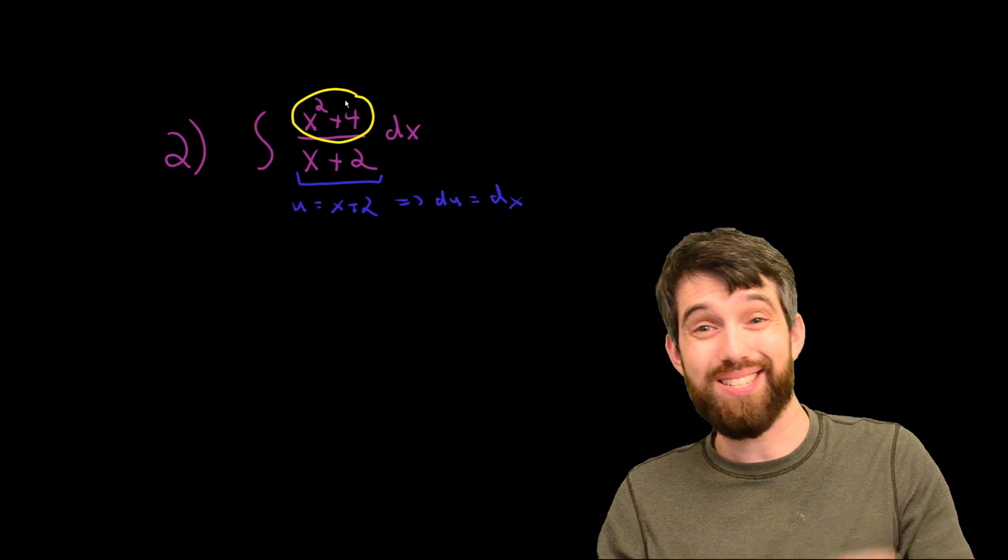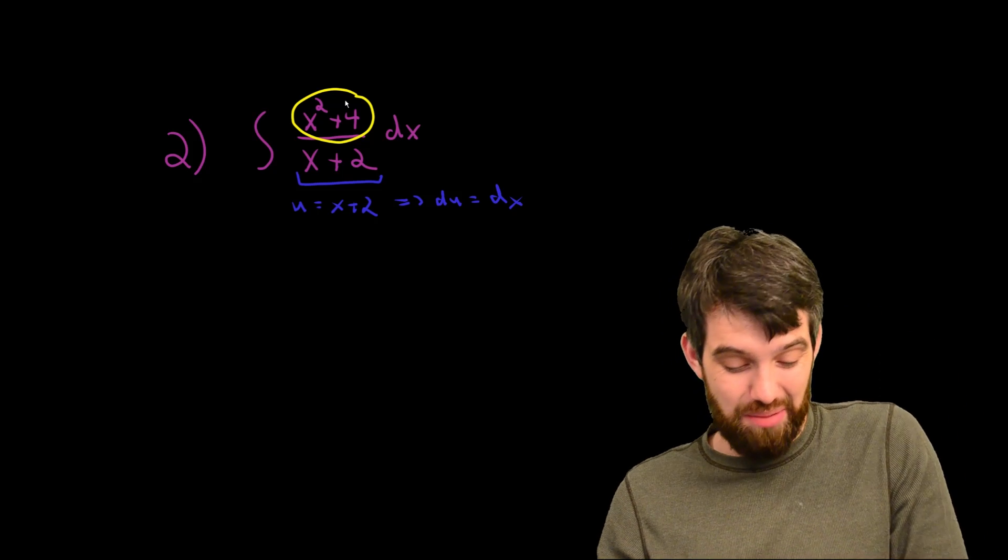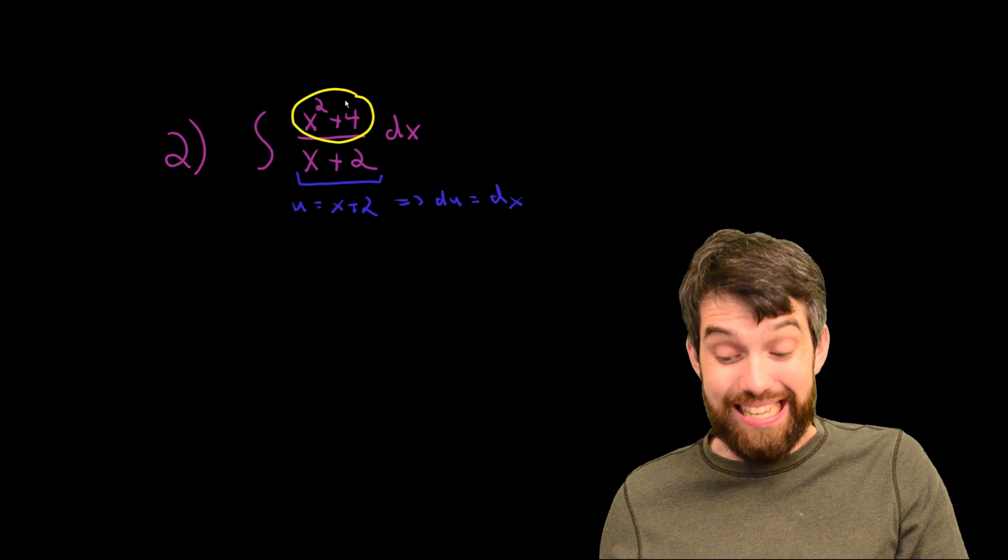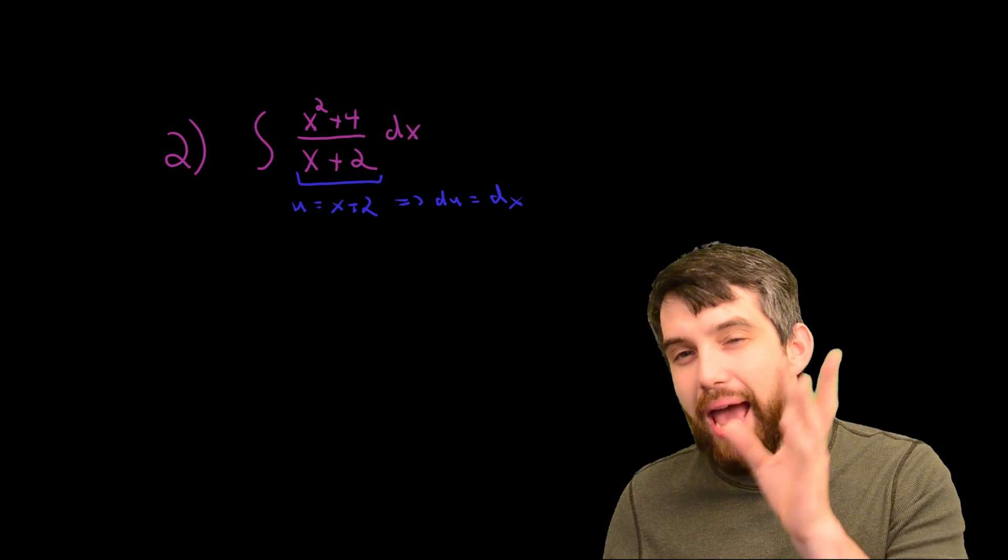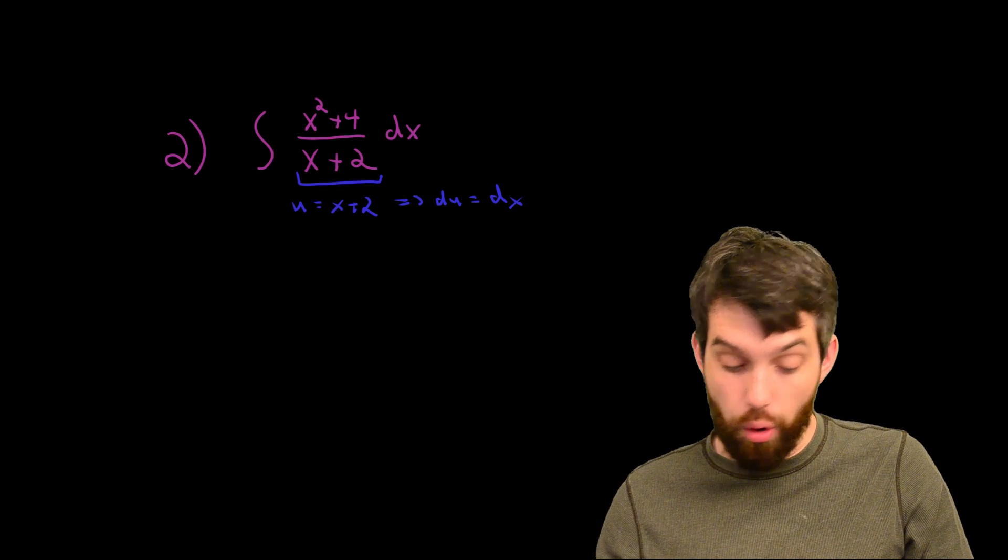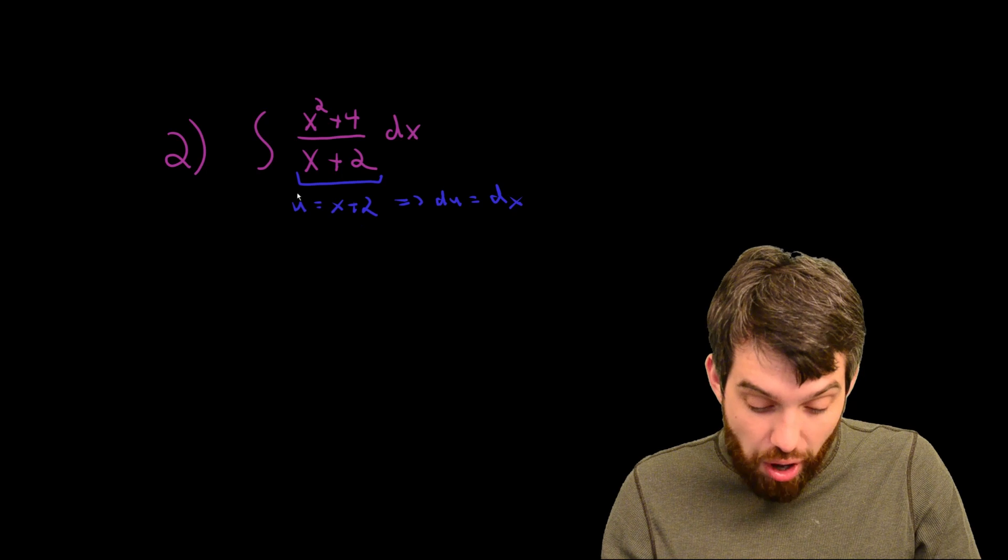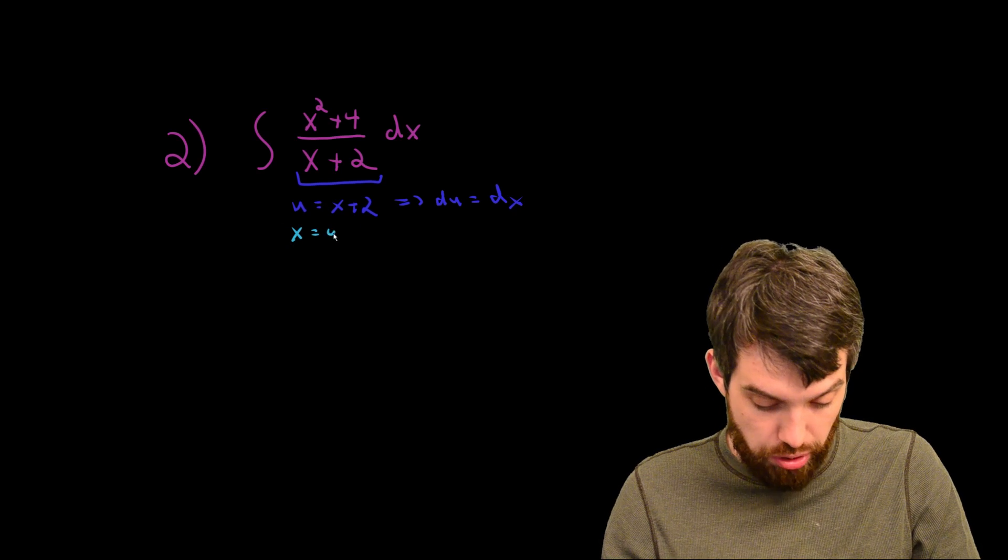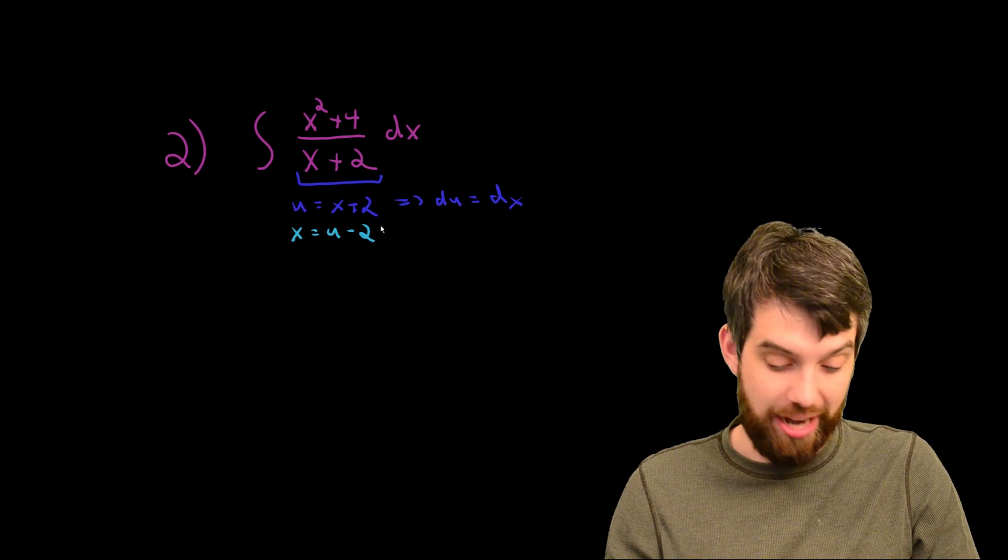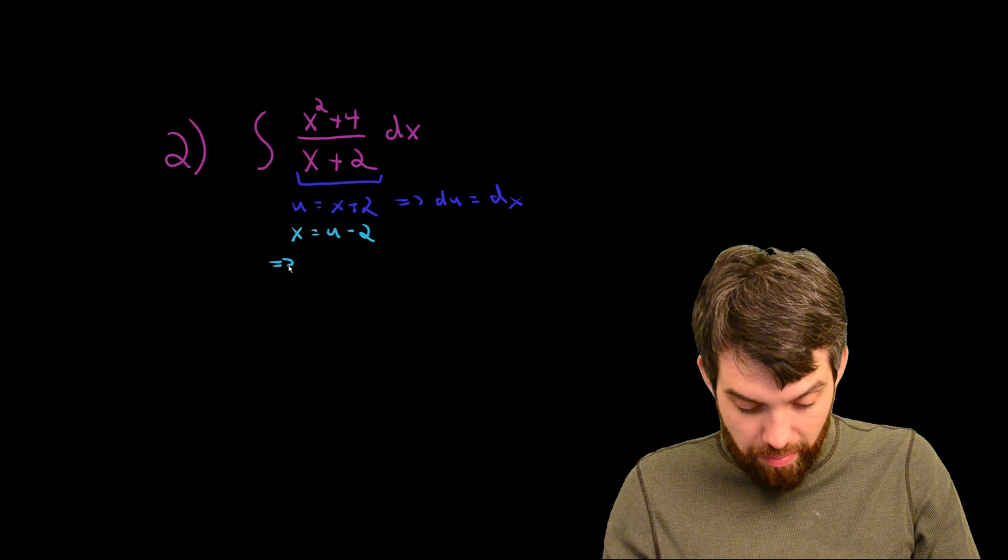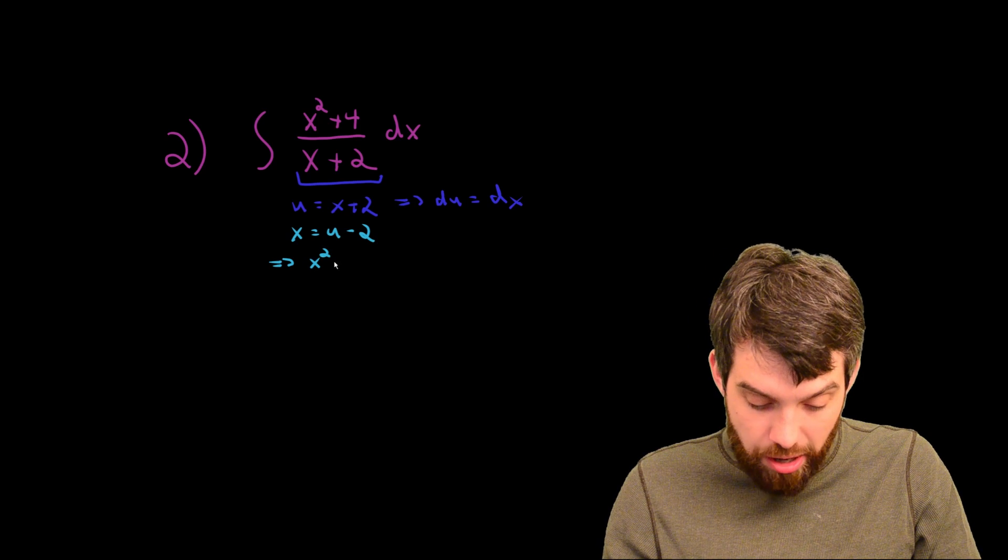We have a numerator, it's got all sorts of x's in it, doesn't cleanly work out as anything to do with du. But I can put my formula for u and I can plug that into the top. So let me see how I can go about doing this. If I've got u is equal to x plus 2, that tells me that x is equal to u minus 2. I can just rearrange the formula.